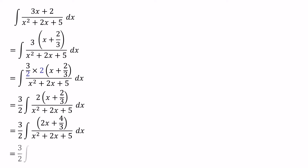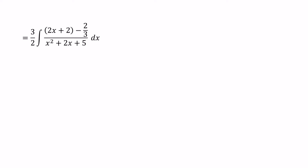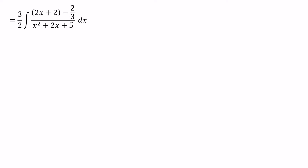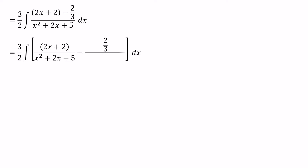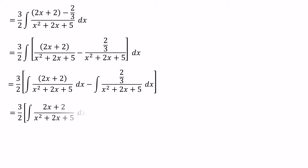We can add plus 2 to the 2x value. To cancel out this plus 2 we put another minus 2. Minus 2 plus 4 over 3 gives us minus 2 over 3. Now we can consider the integral signs separately. The 2 over 3 value is a constant, so we can bring this 2 over 3 value outside of the integral.